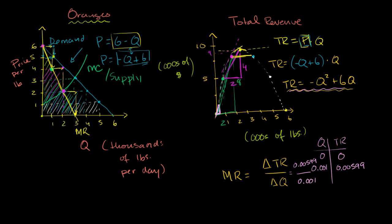At 2,000 pounds, you don't want to produce an additional unit because if you produce that 2,001st pound, your cost is going to be slightly higher than the revenue you bring in, so you'll actually take a slight loss and your total profit will start to go down. And you don't want to produce less than this either, because you'd be leaving money on the table — that incremental pound where marginal revenue was just slightly higher than marginal cost.